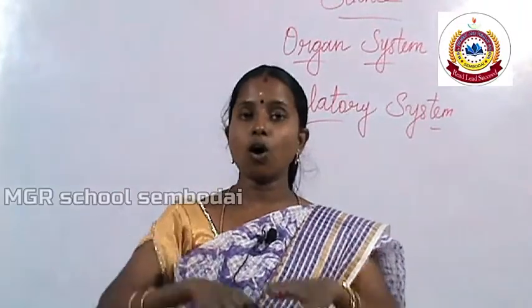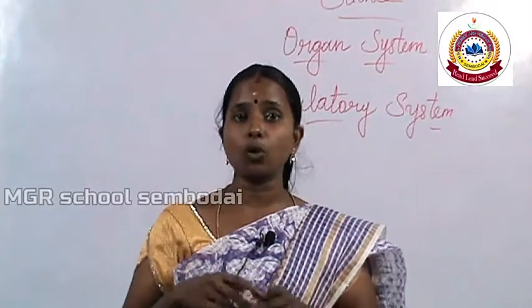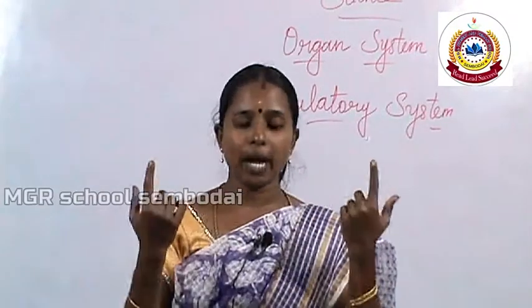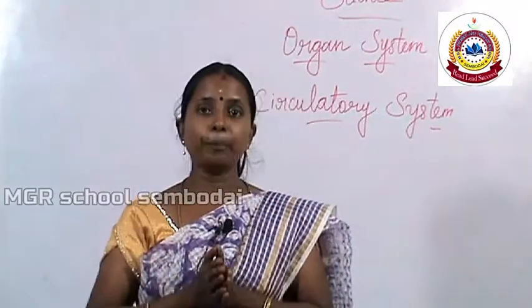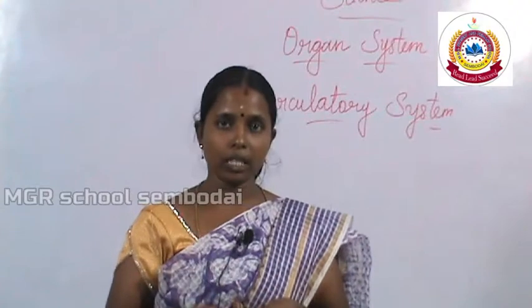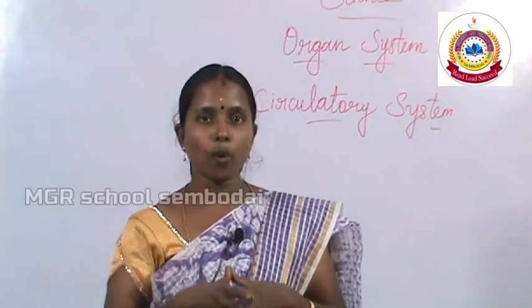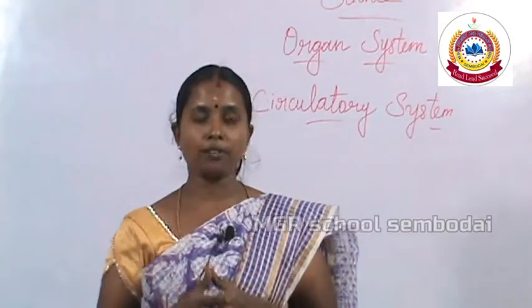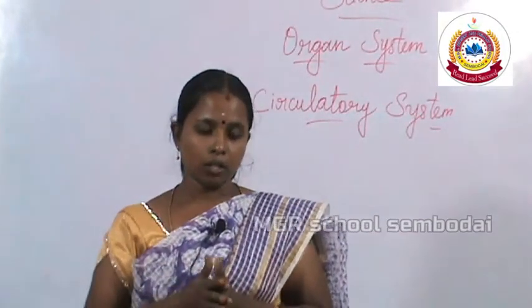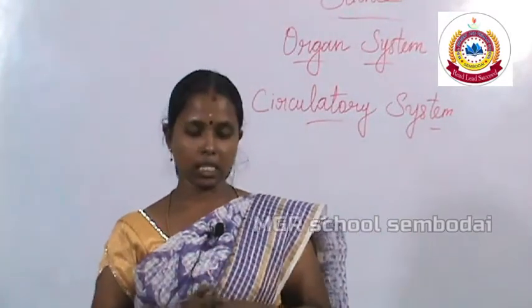The heart is a hollow muscular organ and its shape looks like a conical shape. It is covered with a double-walled membrane called the pericardium. The space between the membranes is filled with pericardial fluid. This pericardial fluid protects the heart from shock. The heart is placed inside the thoracic chamber, between the two lungs.